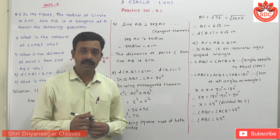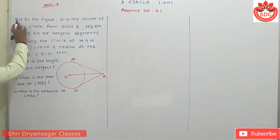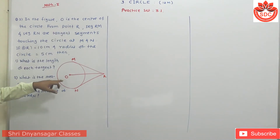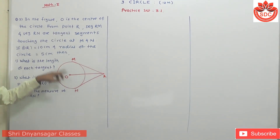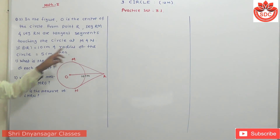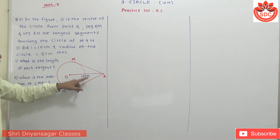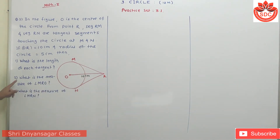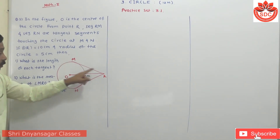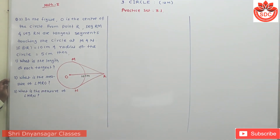Question number 2: in the figure, O is the center of the circle. From point R, segments RM and RN are tangents touching the circle at points M and N. OR is given as 10 cm and the radius of the circle is 5 cm. Find: first, the length of each tangent segment; second, the measure of angle MRO; third, the measure of angle MRN. Draw segments OM and ON. By the tangent theorem, RM is perpendicular to OM and RN is perpendicular to ON.